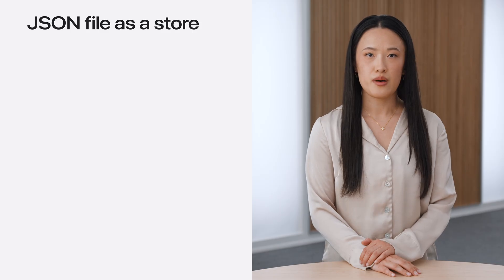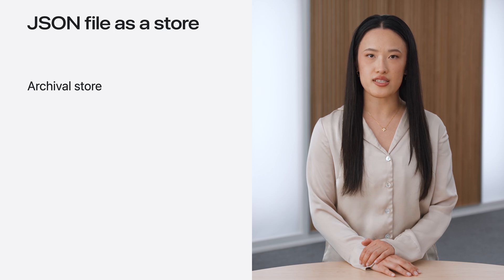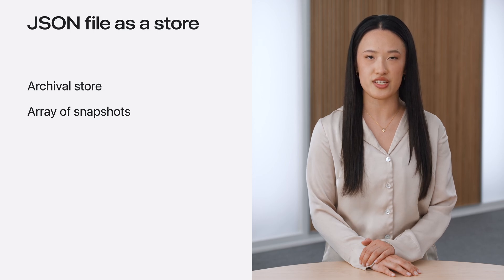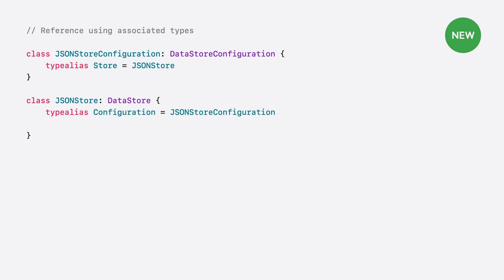Now that I've covered the mechanics of a data store, I want to explore what it's like to actually implement one. I'll implement a store that uses a JSON file to persist the models in the SampleTrips app. Before I get started, there are two points I'd like to clarify. This store is an archival store, meaning the entire file is loaded when reading or writing. Additionally, I'll be using the JSON coders provided by Foundation and storing data as an array of snapshots in the file. The first step is to declare the configuration and store types that conform to the DataStoreConfiguration and DataStore protocols. These types reference each other using associated types. On the configuration, I set the store type as JSONStore, and on the store, I set configuration to JSONStoreConfiguration.